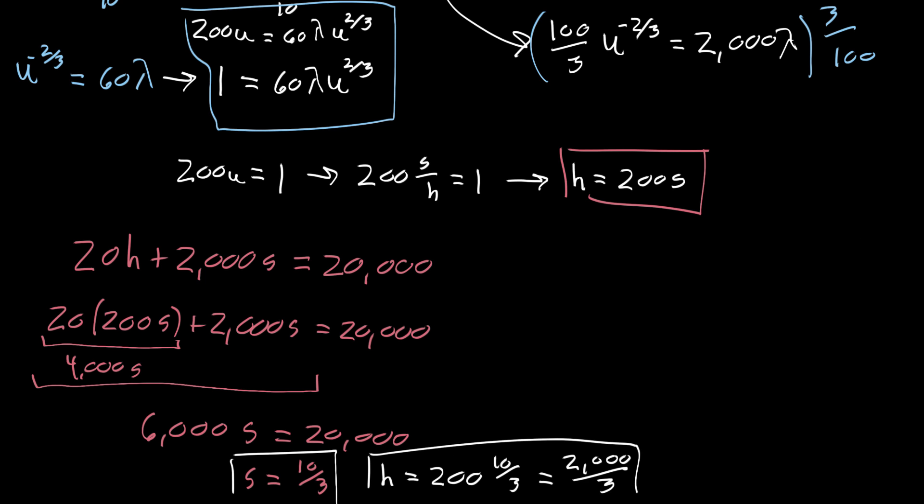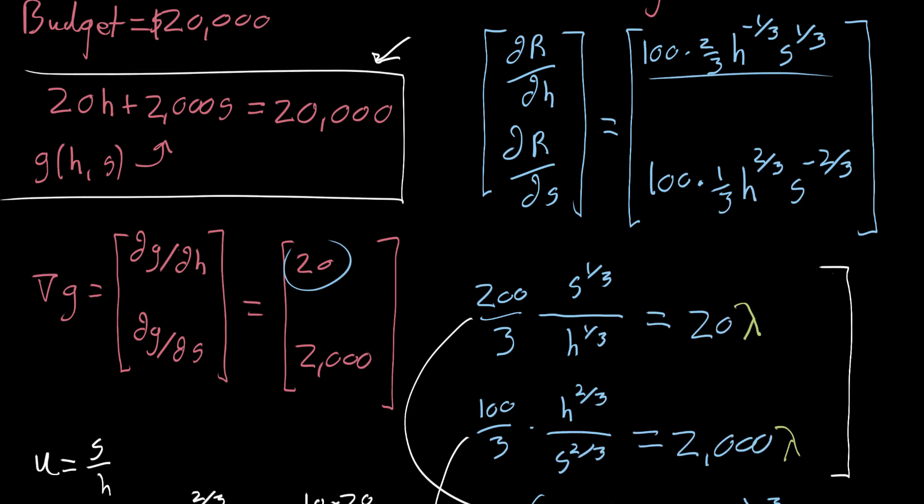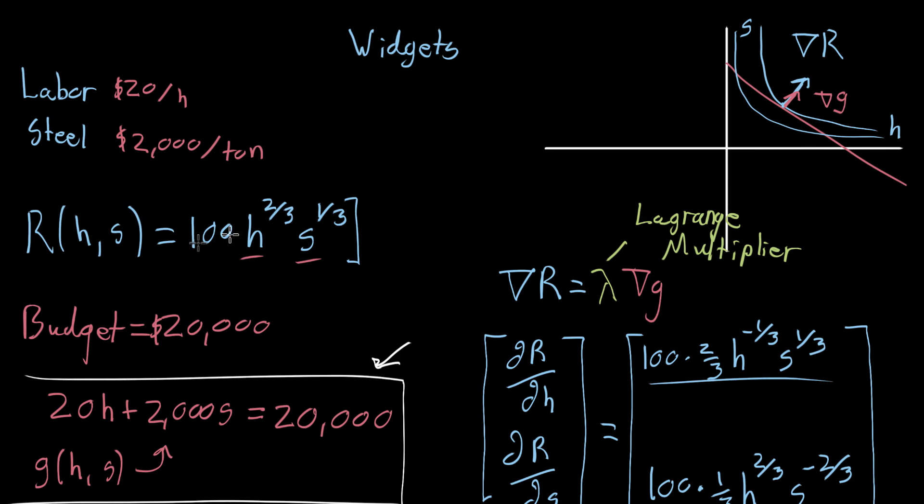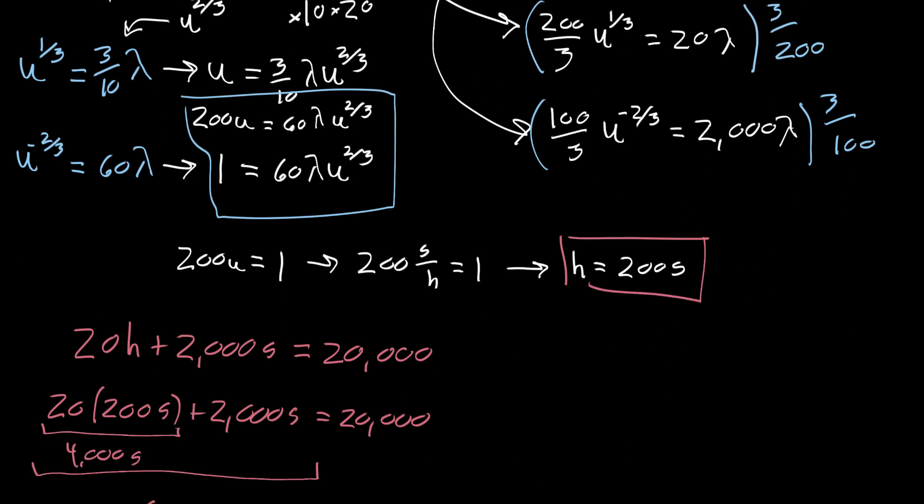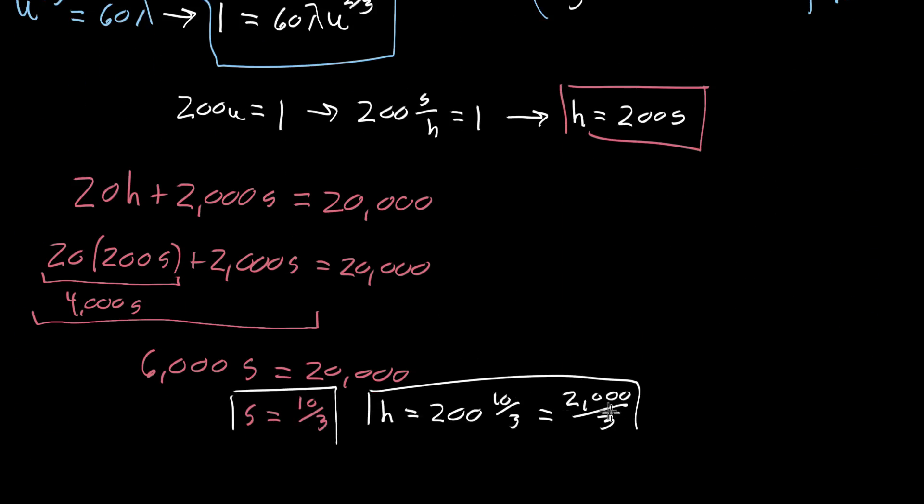So evidently, in our original problem where we have this model for our revenue function for our widgets with $20 per hour of labor and $2,000 per ton of steel with a budget of $20,000, the allocation that you should make is to buy 10 thirds of a ton of steel and 2,000 thirds hours of labor.